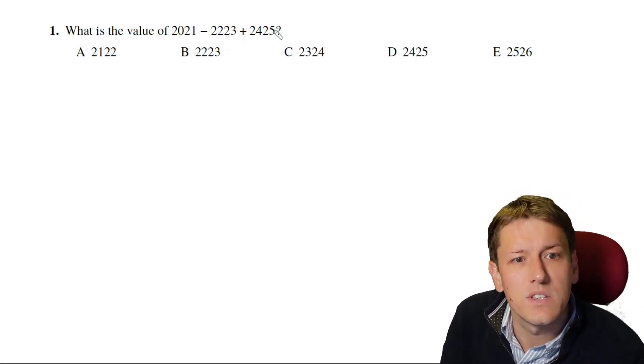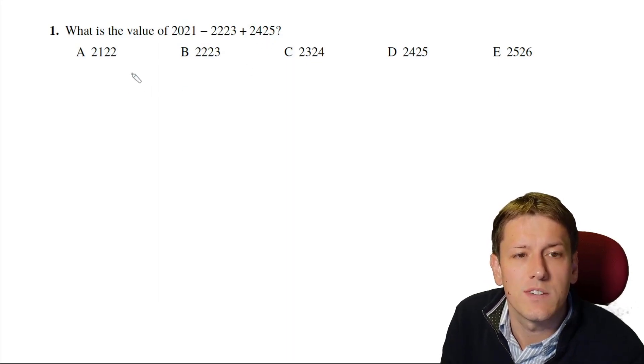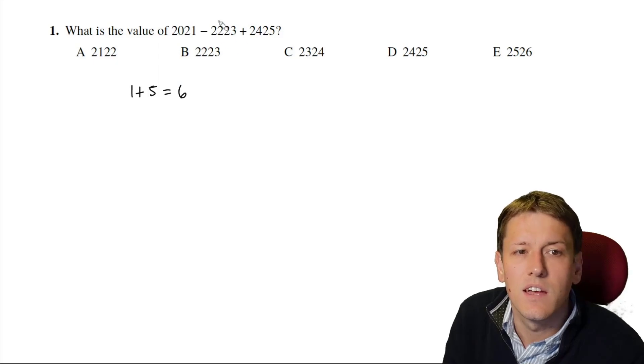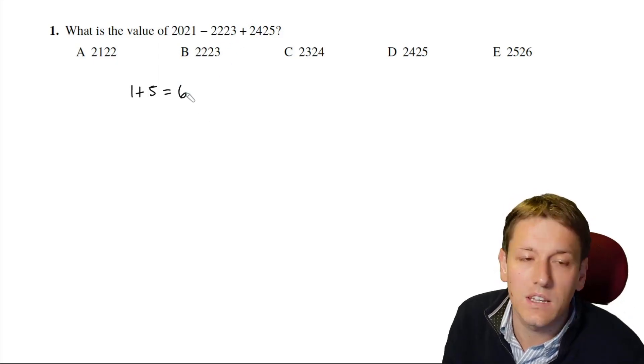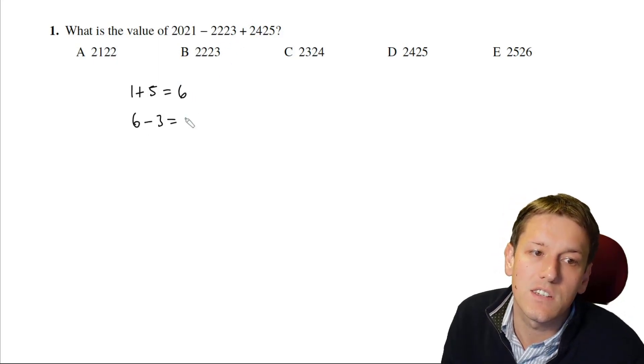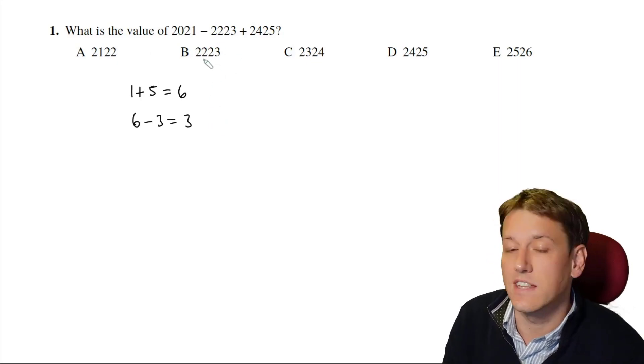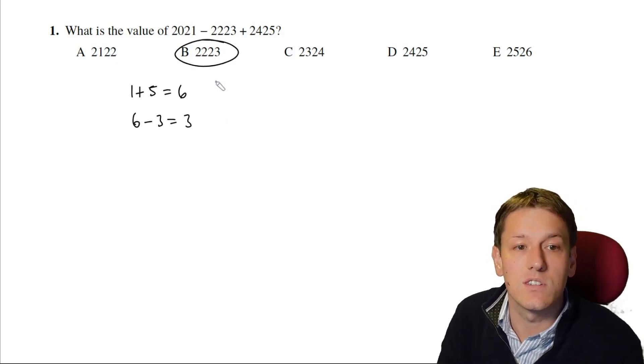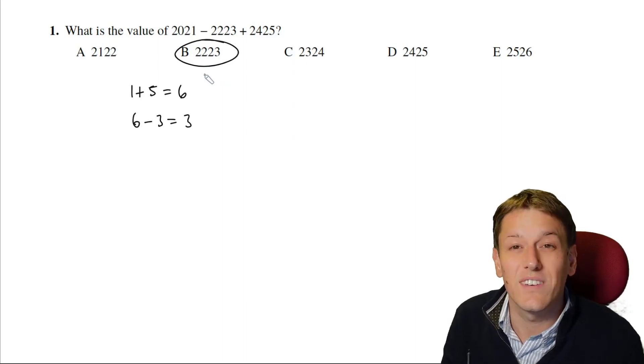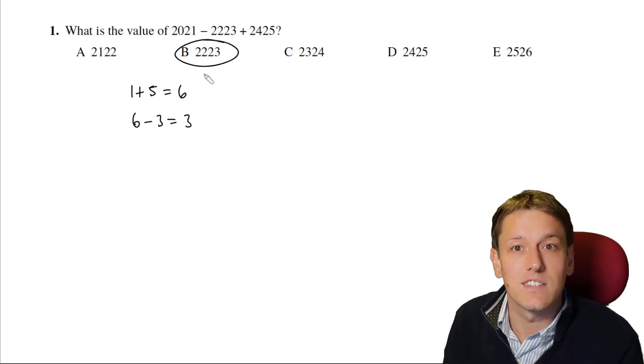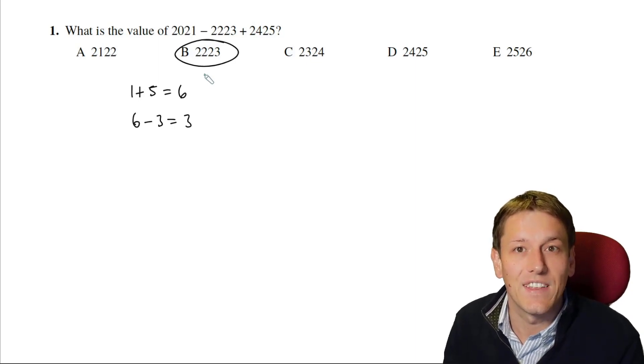So if I add 2021 to 2425, it would end in a 1 plus 5, which is 6. And then if I subtract something that ends in a 3 from that, the last digit is going to be a 3. And the only one of the answers here that ends in a 3 is B, which is 2223. So given this is a Math Challenge question, where we've got multiple choice answers, I can say for sure that B is going to be the answer.